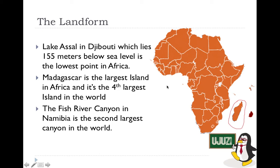The Fish River Canyon is the largest canyon in Africa and the second largest in the world. It is a canyon you can find in Namibia, and it is another popular tourist destination located in southern Africa.